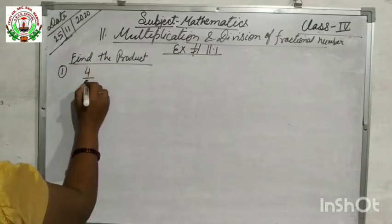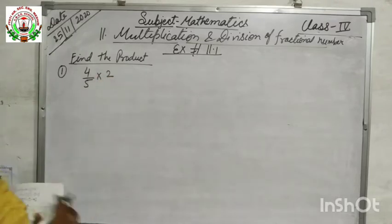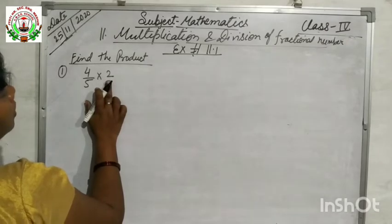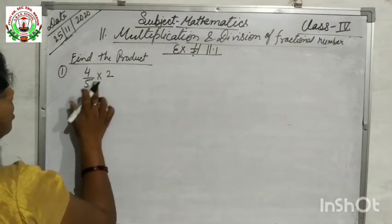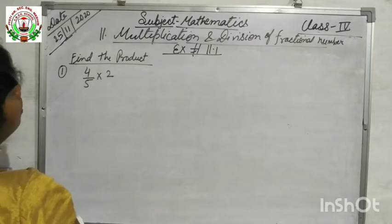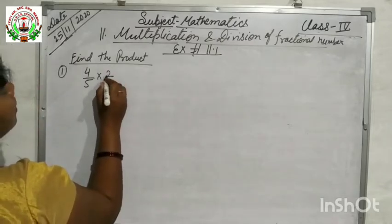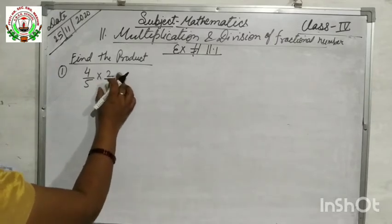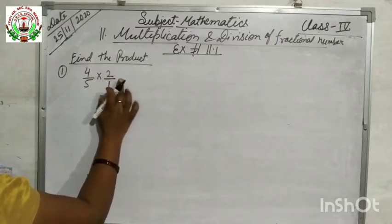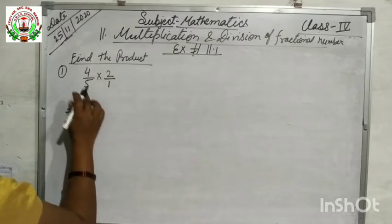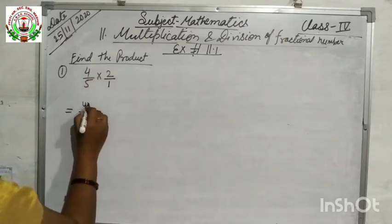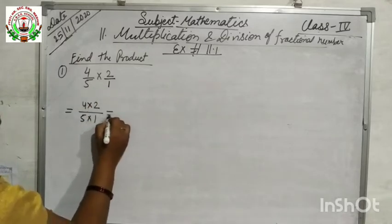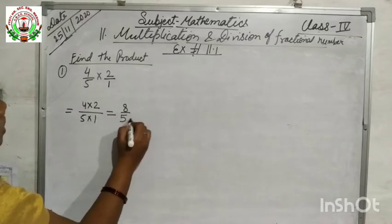Question number 1 is 4/5 into 2. Here it is a fractional number and this is a whole number. We have to multiply this fractional number with this whole number. Since there is no denominator for the whole number, we can write it as divided by 1. We will multiply numerator with numerator: 4 into 2, and denominator with denominator: 5 into 1.